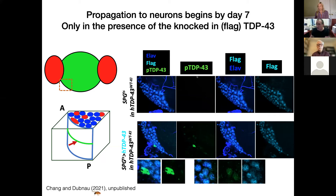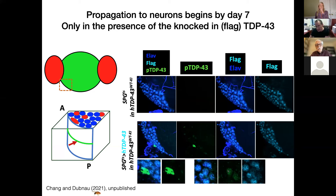The knocked-in humanized TDP-43 is flag-tagged and expressed essentially in all nuclei at normal physiological levels under the endogenous fly promoter, with no evidence for hyperphosphorylated TDP-43. But upon this background, when he induces higher levels of human TDP-43 in the surface glia called SPG, he observes that seven days after induction, there are cytoplasmic puncta that appear to be at some distance from the glial cell — probably in neuronal cytoplasm. Low levels of hyperphosphorylated TDP-43 are also detected in neuronal nuclei at some distance from the glial cell. If you look closely, the individual neurons that begin to have hyperphosphorylated human TDP-43 at some distance from the glia invariably begin to lose the flag-tag, meaning the endogenous humanized flag-tagged TDP-43 is becoming depleted from the nuclei.